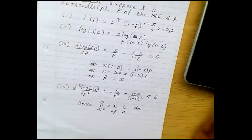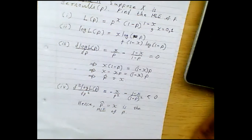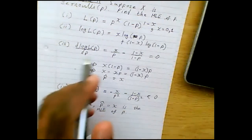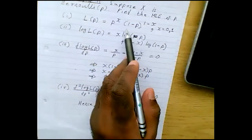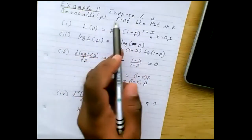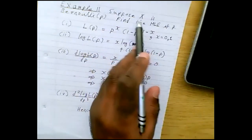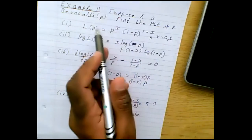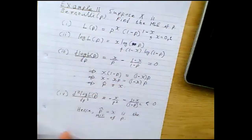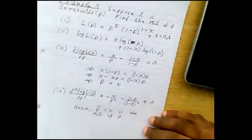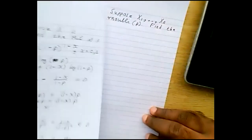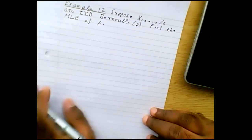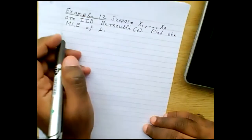In this case we don't take the product because you only have one data point. The likelihood equals the probability mass function directly. But if you have multiple data points, then you take a product. That's example 11. Example 12 is next.